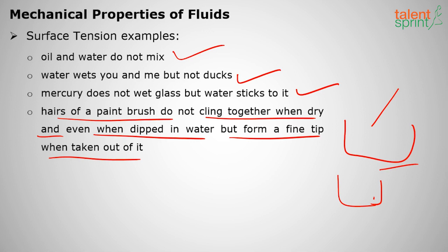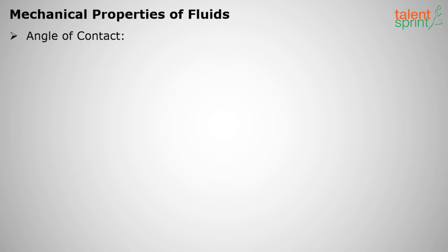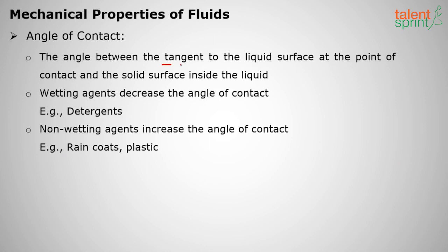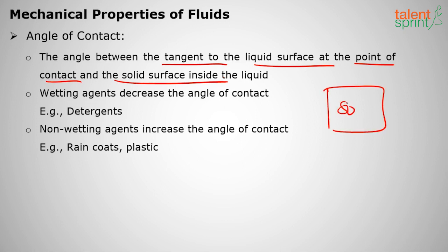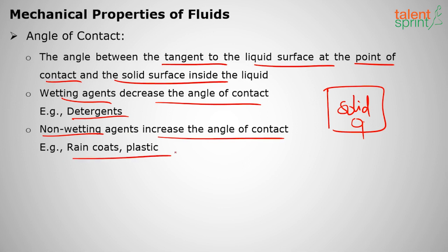These examples of surface tension — like oil and water not mixing — appear in examinations. The angle of contact is the angle between the tangent to the liquid surface at the point of contact and the solid surface inside the liquid. Wetting agents like detergents decrease the angle of contact, while non-wetting agents like raincoats and plastics increase the angle of contact.